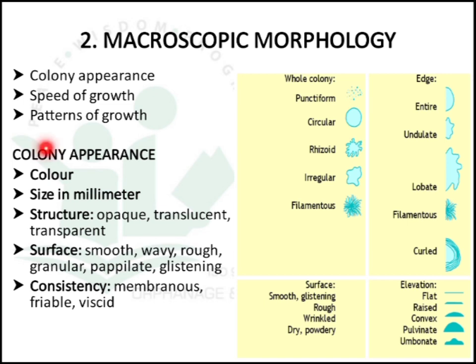In colony appearance, we can study the color of colony, size in millimeters, structure, whether it is opaque, translucent, or transparent. According to the surface, whether it is smooth, wavy, rough, granular, papillae, or clisthenic. And consistency, whether it is membranous, friable, or viscid.